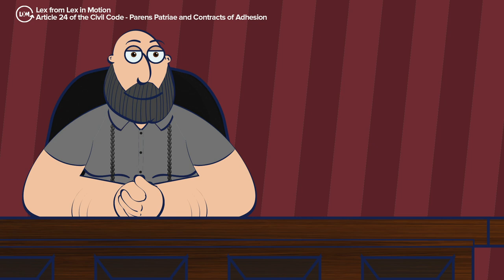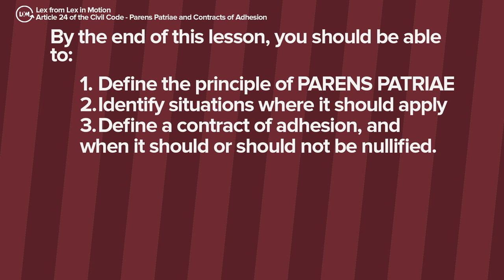Sa unang tingin, kapatid, ay parang naligaw ang provision na ito. Ang mga provisions ng Articles 19 to 23, lahat yan ay mga causes of action, or the reason or legal basis why we can come to court to ask for a relief or remedy. Article 24 is part of the chapter on human relations — that part of the Civil Code that teaches us how we should behave towards one another. However, there is one big difference: Article 24 is a directive addressed not to us, but to the courts. By the end of this lesson, you should be able to: 1. Define the Principle of Parens Patriae. 2. Identify situations where it should apply. 3. Define a contract of adhesion and when it should or should not be nullified.